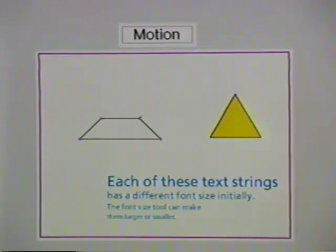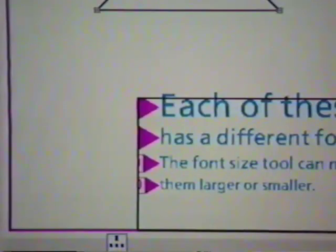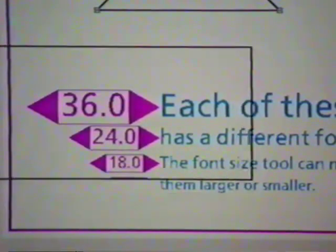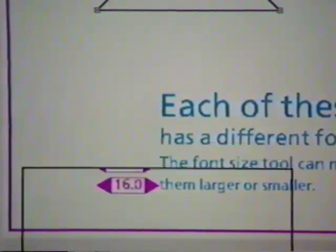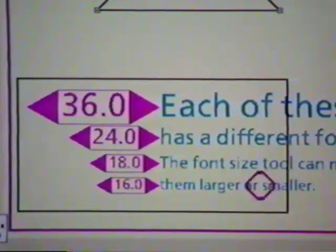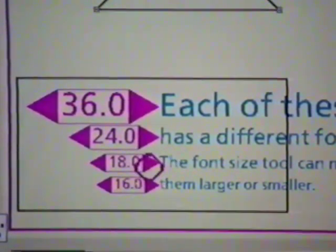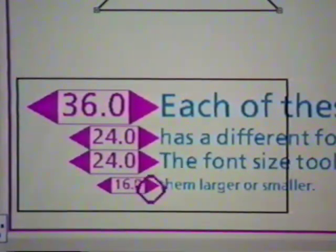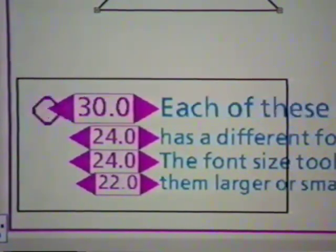Tool parts may be created dynamically. For example, this font size tool creates a font size controller next to each text string. Each region displays the point size of its associated text string. Clicking on the right arrow makes the font larger. Clicking on the left arrow makes the font smaller.